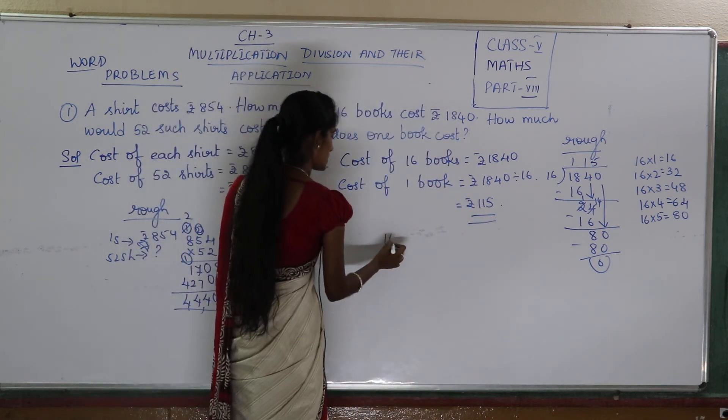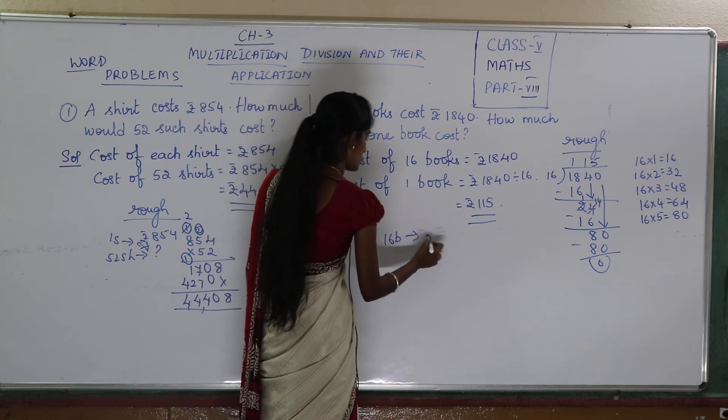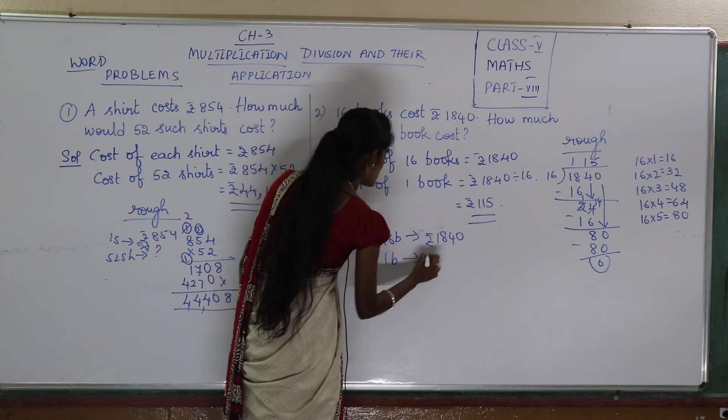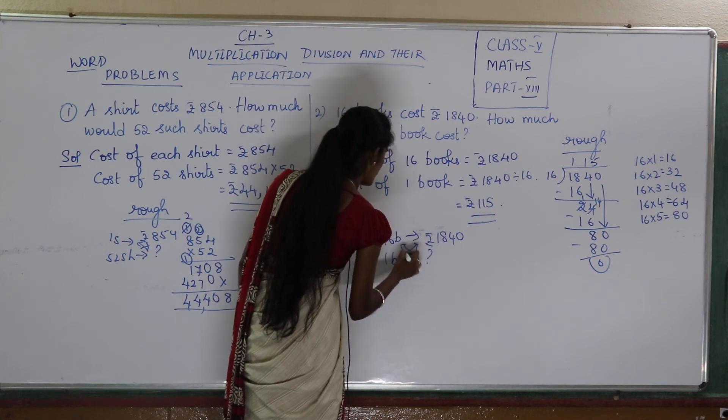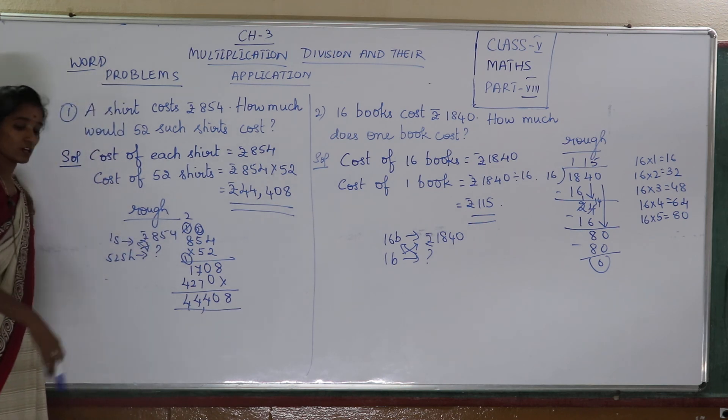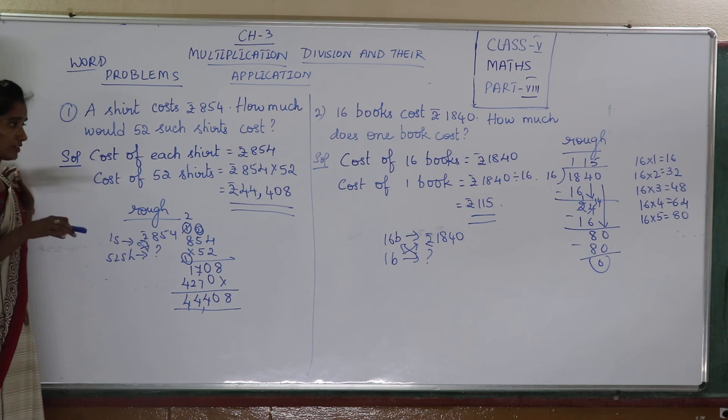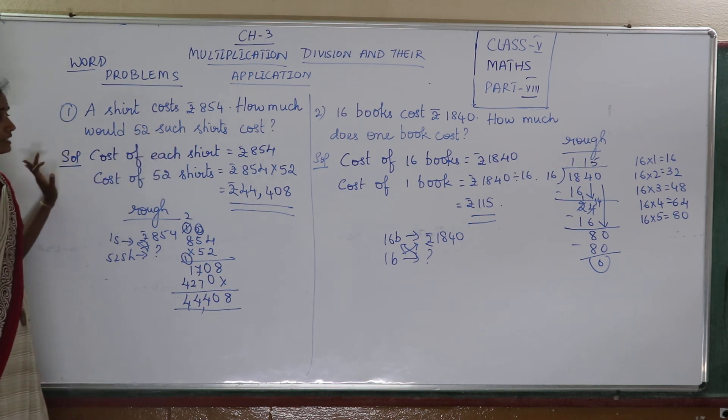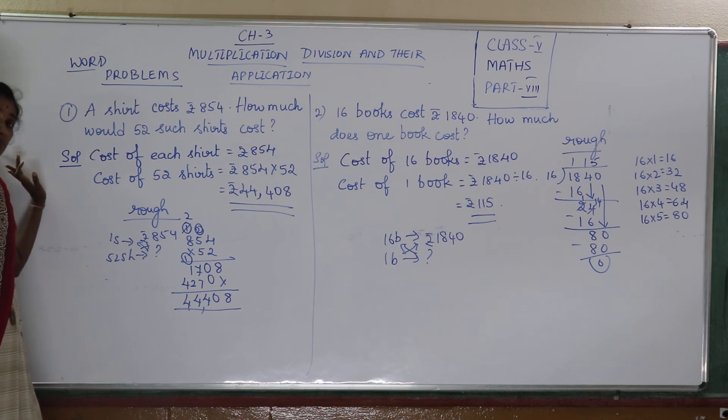You can write 16 books cost is 1840. One book cost is how much? So whenever we write this, it will be very clear. So we are clarifying that this is my division. This is my multiplication.